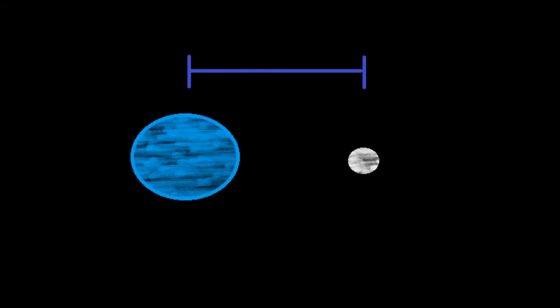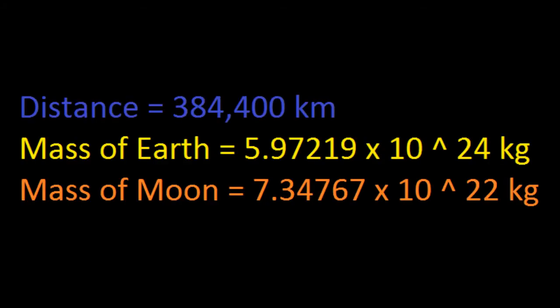The distance from Earth center to Moon center is 384,400 kilometers. The mass of Earth is about 5.97 times 10 to the 24th kilograms. The mass of the moon is about 7.34 times 10 to the 22nd kilograms.